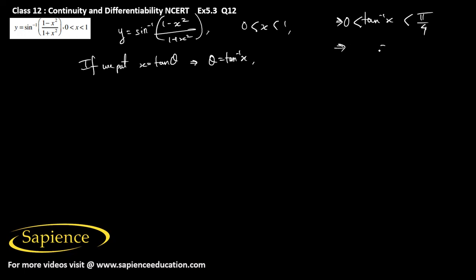From here we can say that 2 tan inverse x will go from 0 to pi by 2, meaning 2 theta is greater than 0 and less than pi by 2. This comes within the principal value branch of tan inverse, which is minus pi by 2 to pi by 2.